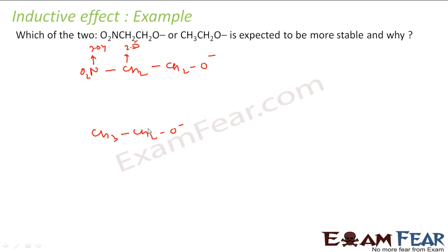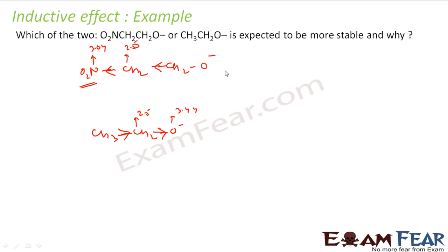For the carbon-oxygen bond, carbon is 2.55 and oxygen is 3.44. The nitrogen in the NO2 group is more electronegative than carbon, so it pulls electrons toward itself — inductive effect in that direction. In the other molecule, the methyl group has a +I effect, donating electrons toward the oxygen. So for the C-O bond, inductive effect acts in this direction as well.